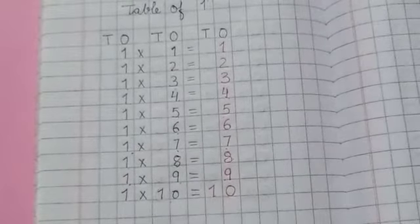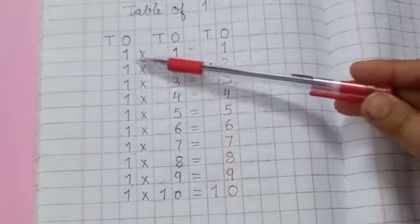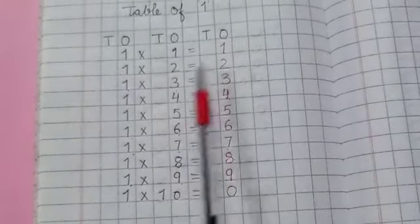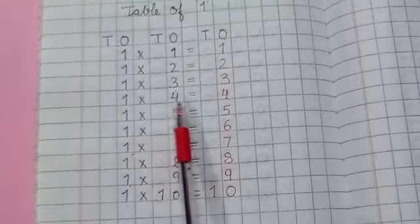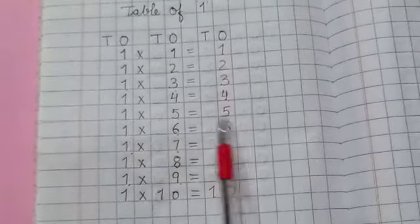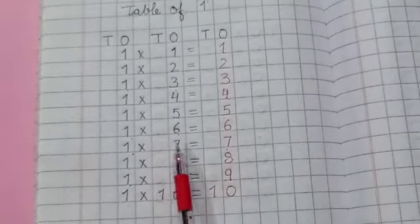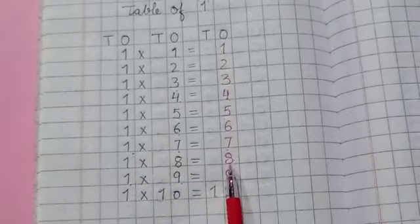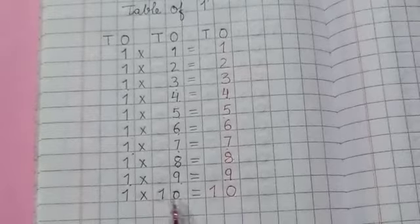Kids, again repeat with me table of one. Speak after me loudly. One ones are one. One twos are two. One threes are three. One fours are four. One fives are five. One six are six. One sevens are seven. One eights are eight. One nines are nine. One tens are ten.